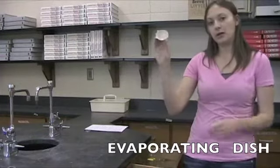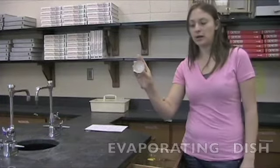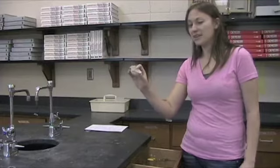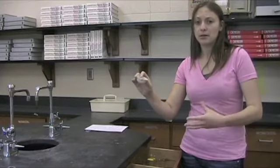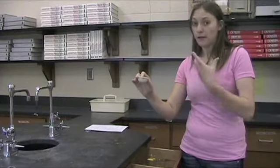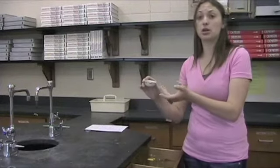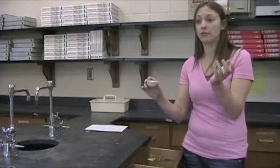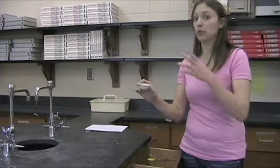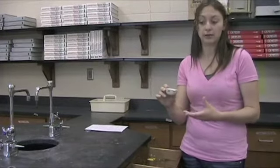Next we have an evaporating dish. Evaporating dishes are very similar to crucibles. They are ceramic. They aren't just used for what they sound like, evaporating things. So, I'll put this over a Bunsen burner. I'll have a solution and I'll try to evaporate off just the liquid and leave whatever solid I had in there.